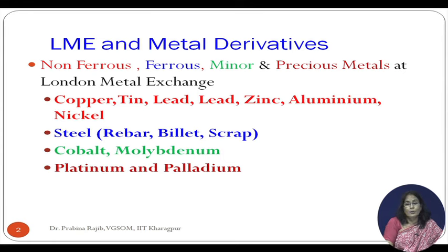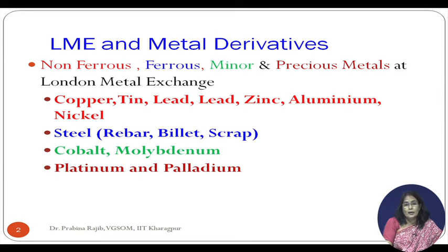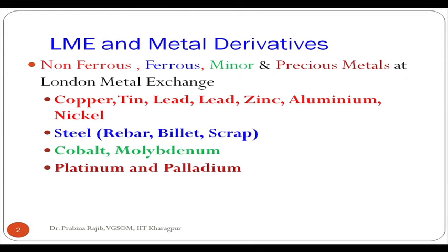From the non-ferrous category you have copper, tin, lead, zinc, aluminum, nickel, and others. From the ferrous metal category you have steel, and within steel you have rebar, steel billets, and steel scrap. From the minor metal category you have cobalt and molybdenum, and from the precious metal category you have platinum and palladium contracts.